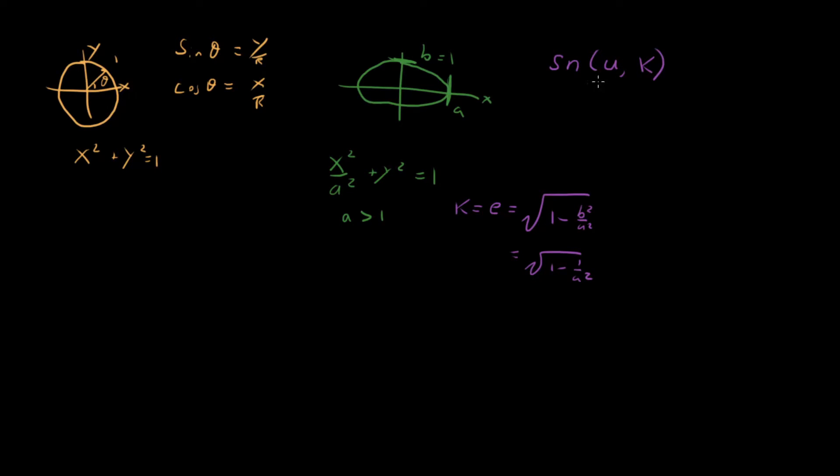So what we're going to say is sn of some u, which is kind of like theta, and the eccentricity of the ellipse, so the shape of the ellipse, is equal to y. So just like sine.